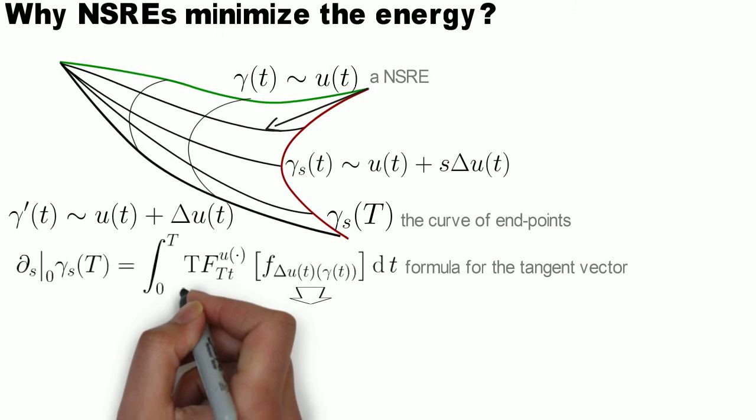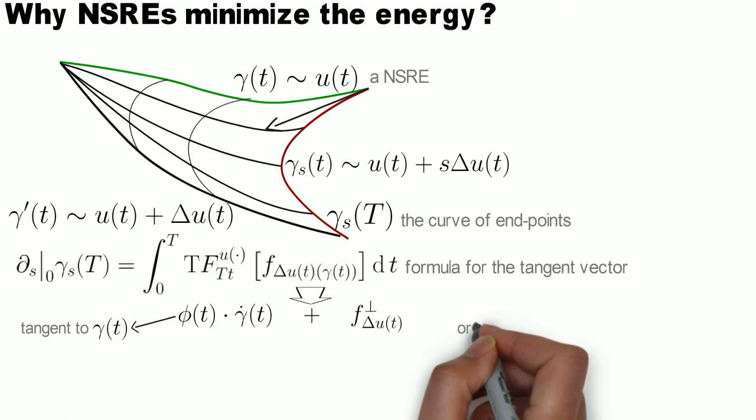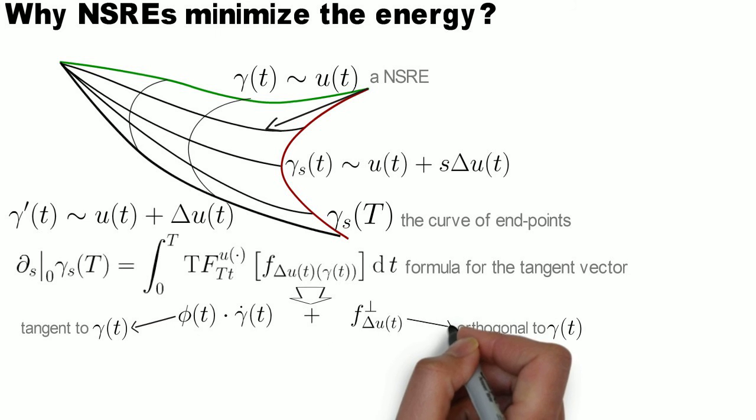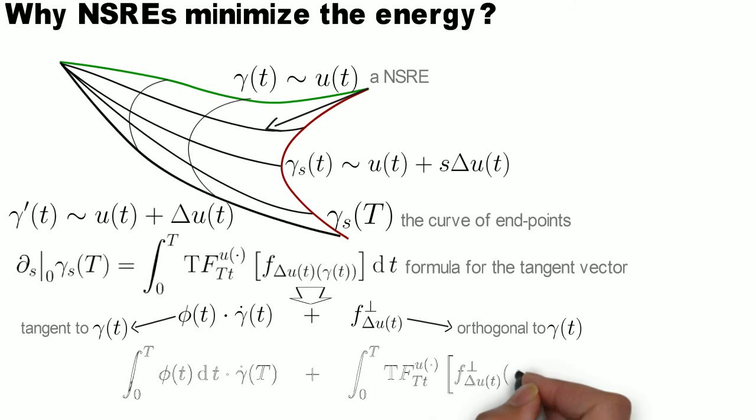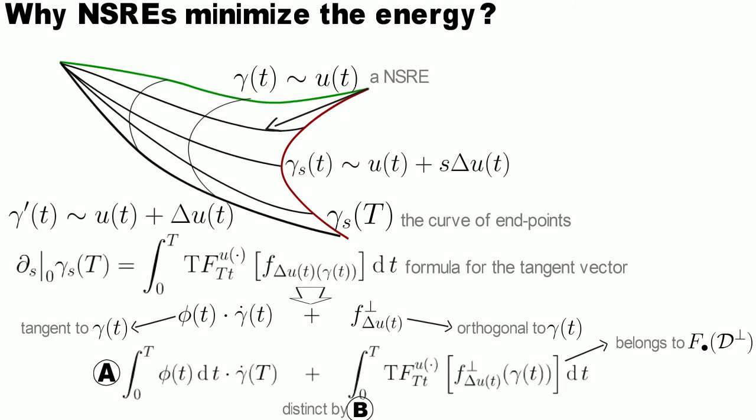We can decompose this expression to part tangent to gamma and perpendicular to gamma, and then by using the geometric conditions of the normal Subriemannian extremal further decompose the resulting tangent vector to two parts. By the second of the geometric conditions these parts are distinct, and by the first of the conditions we can control the part of the vector which is tangent to gamma.